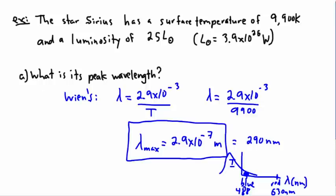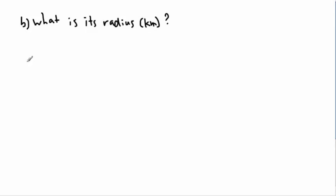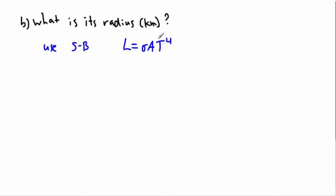We can even go further and ask: what is its radius? If we want the radius, we should use Stefan-Boltzmann's law, which says that luminosity is equal to sigma times A times T to the fourth. That's the equation we're going to use.